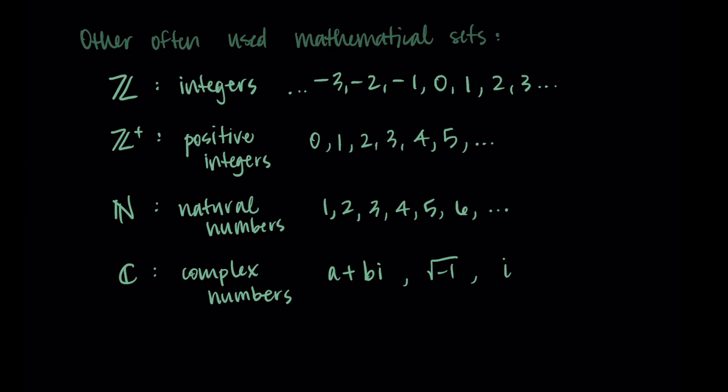And then another one that shows up pretty frequently is ℚ for the rational numbers. So the Q goes for quotient. So rational numbers represent quotients. These are of the form p divided by q, where p and q are integers, they're in ℤ. And q would be non-zero. So you can't divide it by zero. So rational numbers would be everything that can be written as a fraction or as a quotient in this way.